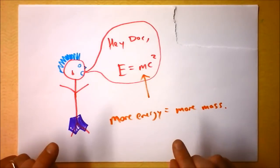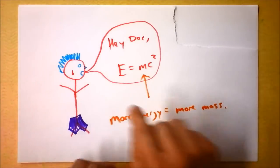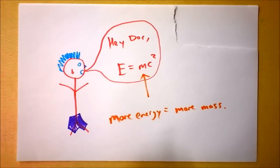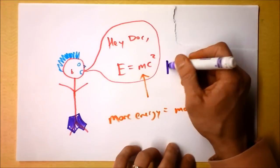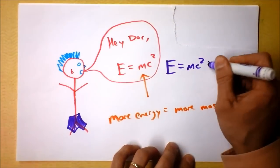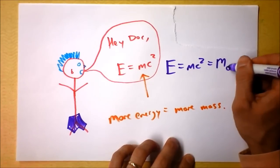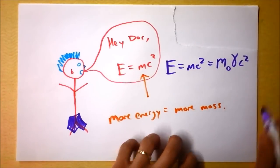what doesn't that mean, though, that light doesn't have any energy? Because if it's mass times the speed of light, then light won't have any energy. And I said, that's cool. I mean, kinda. Because E is MC squared really means E is M naught times gamma times C squared.